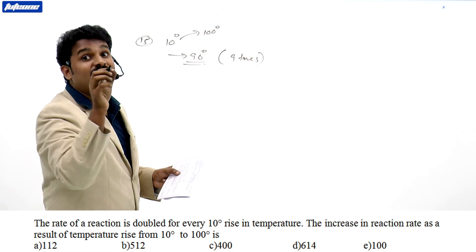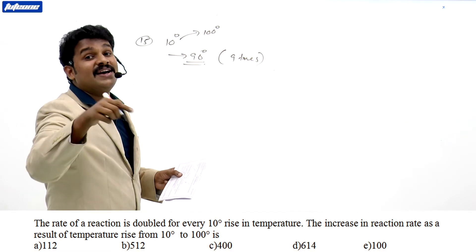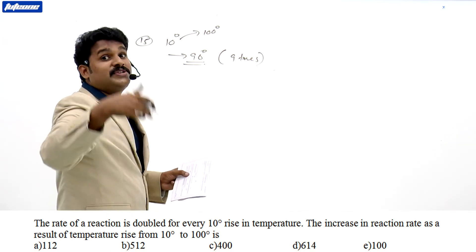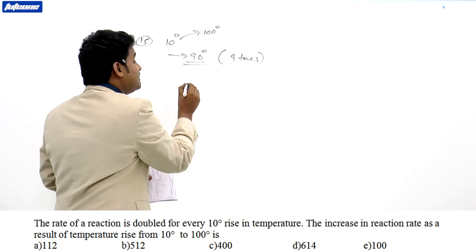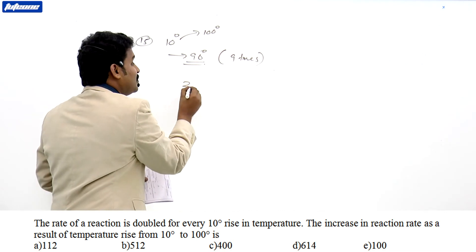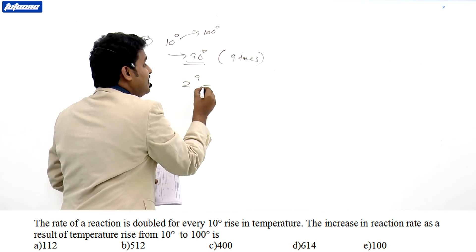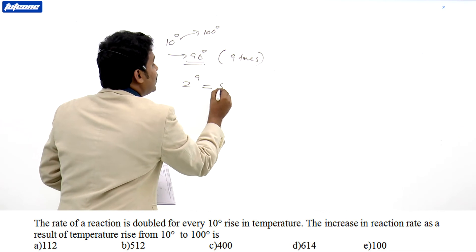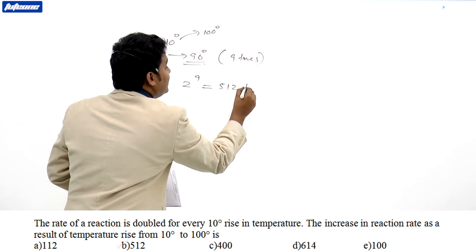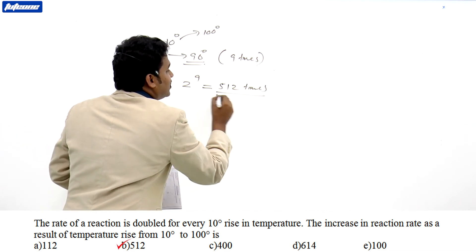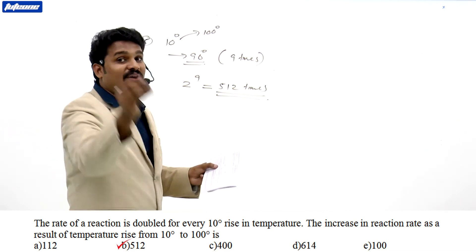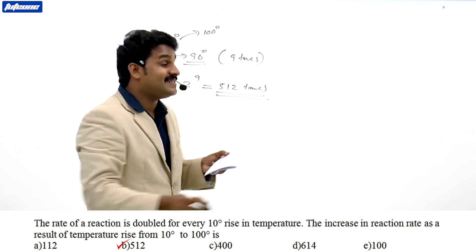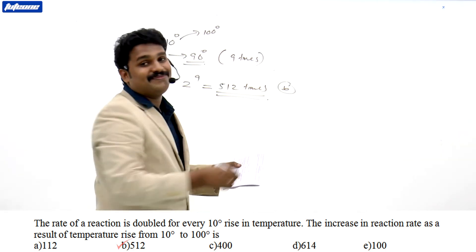In every 10 degree rise, rate of reaction becomes doubles. Therefore, the total increase is 2 raised to 9, which is equal to 512. Therefore, 512 times increase takes place. Answer B.